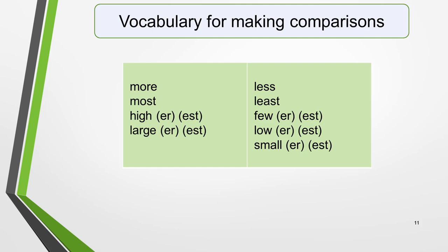Here's some useful vocabulary for making comparisons: more, most, high, higher, highest, large, larger, largest, less, least, few, fewer, fewest, low, lower, lowest, and small, smaller, smallest. These words can be used to form many different sentence structures useful for Task 1 essays.